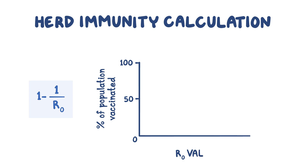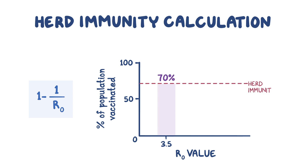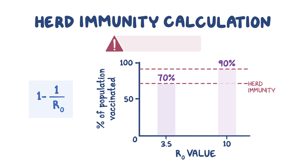If one region had an R0 value of 3.5, the equation would be 1 minus 1 over 3.5, meaning that region would need to vaccinate 70 percent of its population to achieve herd immunity. If another region had an R0 value of 10, then the equation would be 1 minus 1 over 10, meaning that region would need to vaccinate 90 percent of its population to achieve herd immunity. Many people travel between regions frequently, which makes the true herd immunity number hard to calculate.